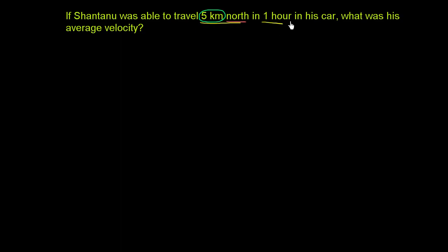And he did it in one hour in his car. What was his average velocity? So velocity, and there's many ways that you might see it defined, but velocity, once again, is a vector quantity. And the way that we differentiate between vector and scalar quantities is we put little arrows on top of vector quantities.